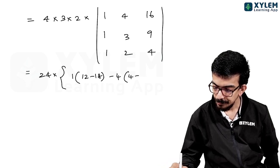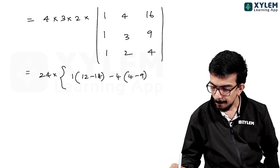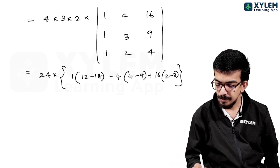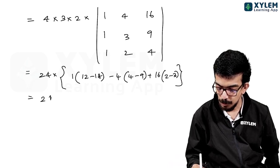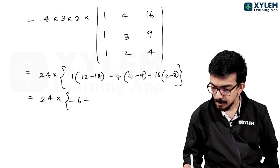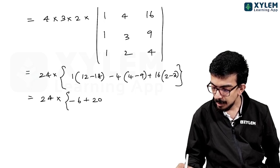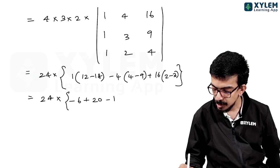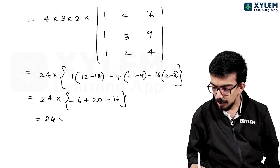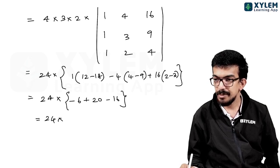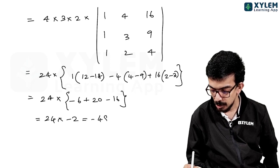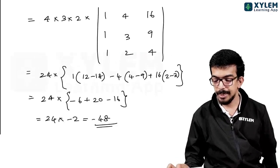Expanding the determinant: this is 24, minus 6, plus 20, minus 6. Then this is minus 16, 24, minus 20, plus 20, minus 2, minus 48. The correct answer is obtained after these calculations.